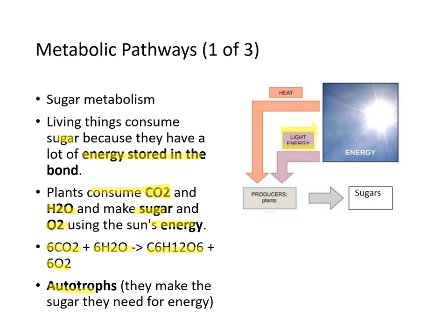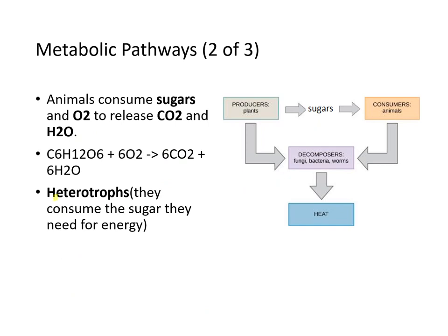Plants are called autotrophs because they make the sugar they need for their own energy. Heterotrophs consume the sugar that autotrophs make — animals consume sugar and O2 to release CO2 and H2O. Here producers make the sugars, consumers use them, and both producers and consumers are decomposed by decomposers.